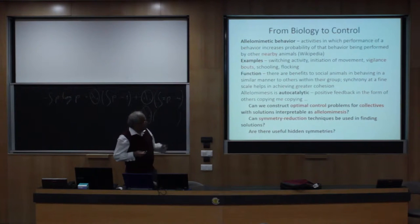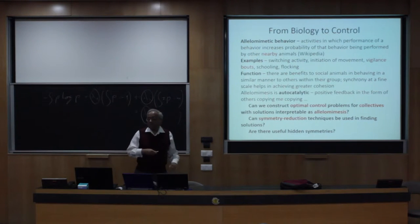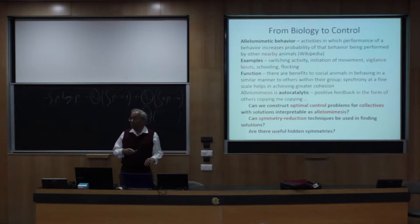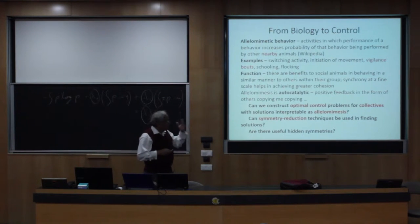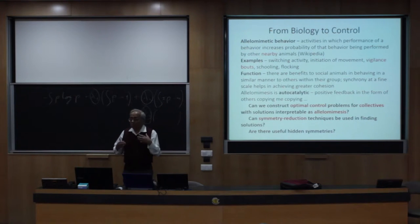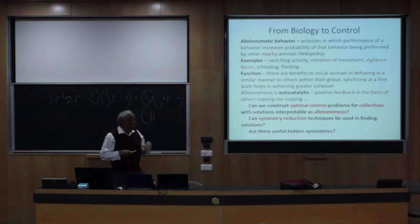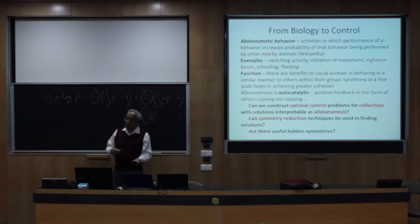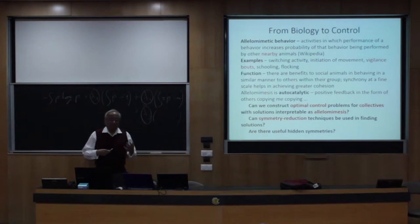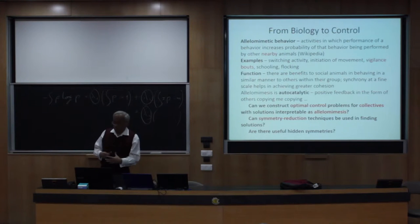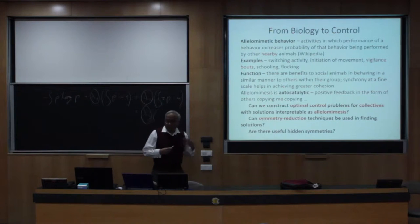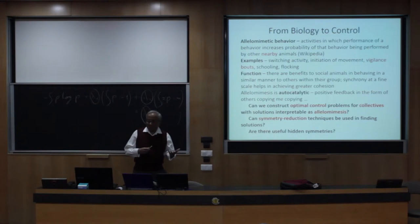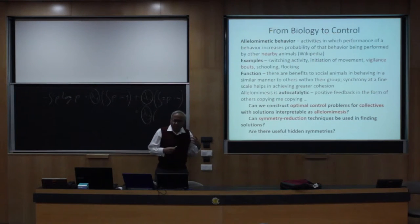So the suggestion is that this principle of allelomimesis is at work, and this copying behavior gets propagated in a group of animals in order to ultimately produce something seemingly cohesive that emerges. So what are the benefits of this? Well, animals can remain safe if they copy other animals that are doing escaping maneuvers, for instance. Allelomimesis also reflects some sort of positive feedback. So in my story today, I've been motivated by some prior work of our group where we concretely studied some optimal control problems and interpret resulting solutions as allelomimesis.